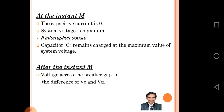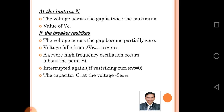After instant A, the voltage across the breaker gap is the difference of Vc and Vcl as seen in the figure. At instant A, the voltage across the gap is twice the maximum value of Vc. If the breaker restrikes, the voltage across the gap becomes partially zero — voltage falls from 2 Vc max to zero — and a severe high frequency oscillation occurs.